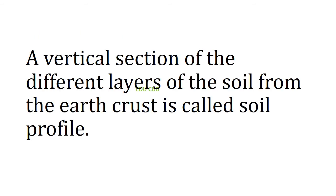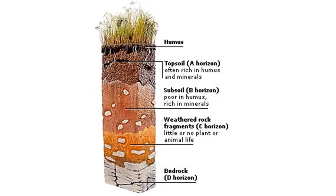The next topic is soil profile. A vertical section of the different layers of soil from the Earth's surface to the bedrock is called a soil profile. It extends from the top layer down to the bedrock. There are mainly three layers that can be identified in the soil profile: topsoil, subsoil, and bedrock.